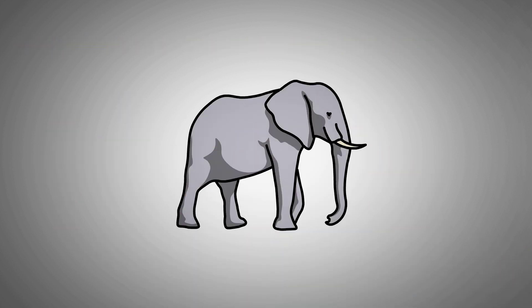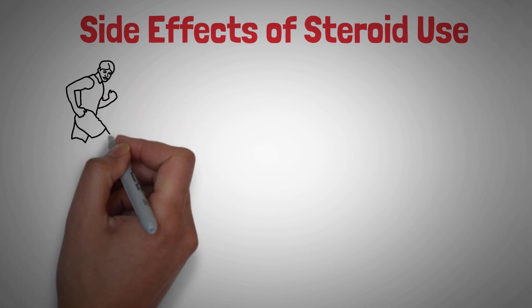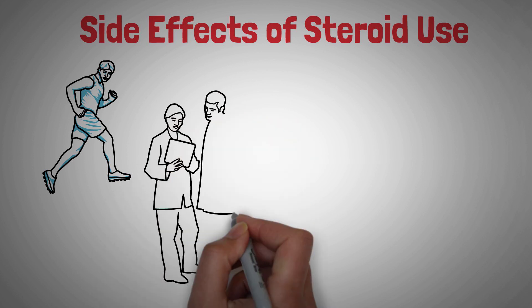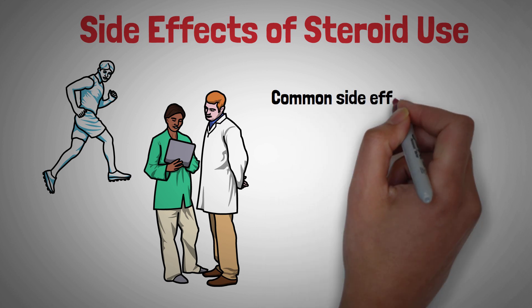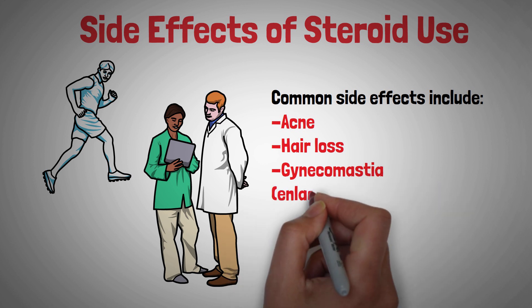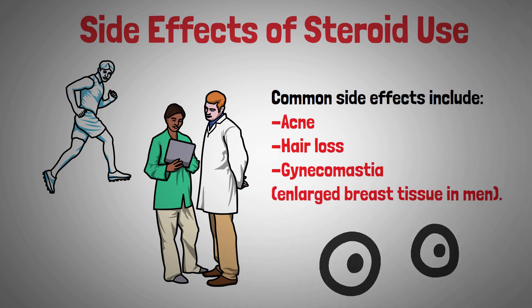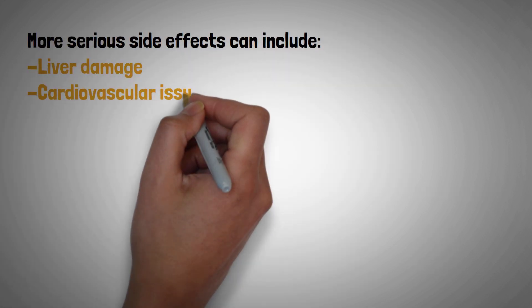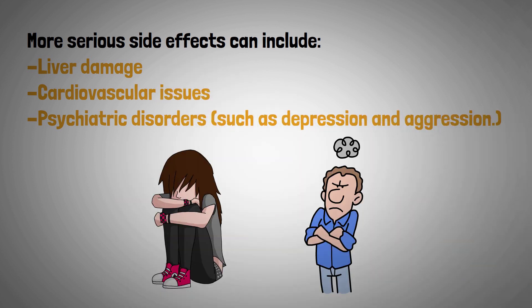Now, let's talk about the elephant in the room, the side effects of steroid use. While some people may experience minimal side effects, others can face a host of health problems, ranging from mild to severe. Common side effects include acne, hair loss, and gynecomastia, which is the enlargement of breast tissue in men. More serious side effects can include liver damage, cardiovascular issues, and psychiatric disorders, such as depression and aggression.